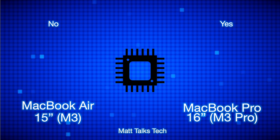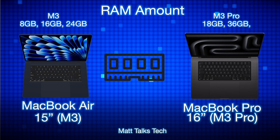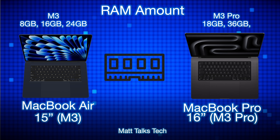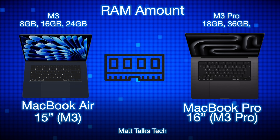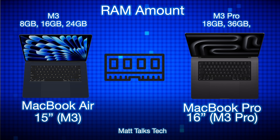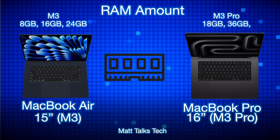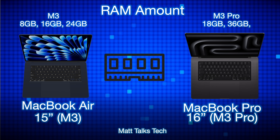For RAM, the MacBook Air M3 starts at 8GB, which is quite limiting — opening more than about 10 tabs alongside apps like Outlook and Word can cause slowdowns. The MacBook Pro starts at 18GB, handling around 30 tabs with ease. The M3 offers 8 to 24GB options, while the M3 Pro offers 18 or 36GB.